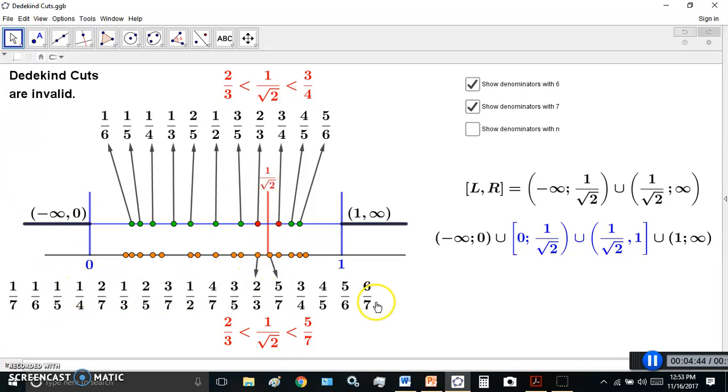These are all the fractions with denominator seven or less in the interval zero one. You can increase these denominators to any number you like. And the bigger it gets, the closer these two dots here get to the actual number we're dealing with.